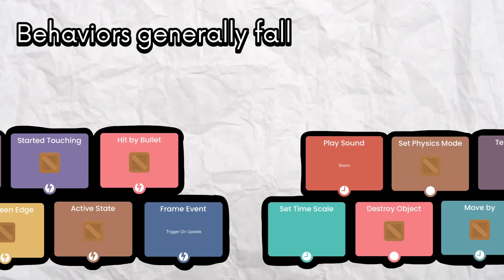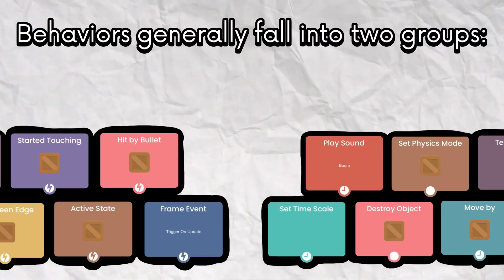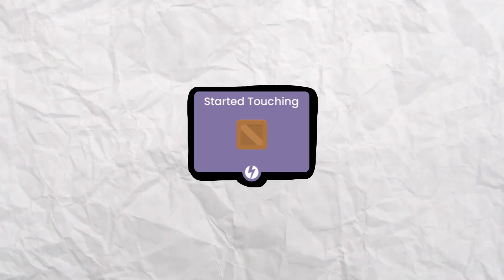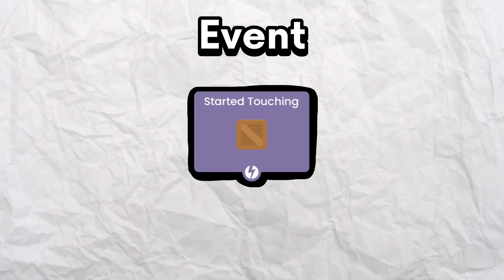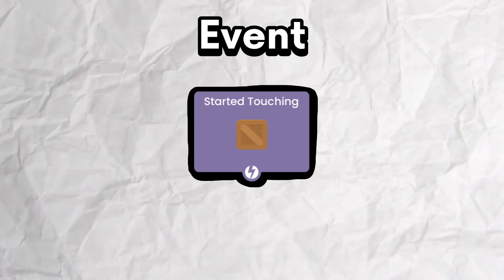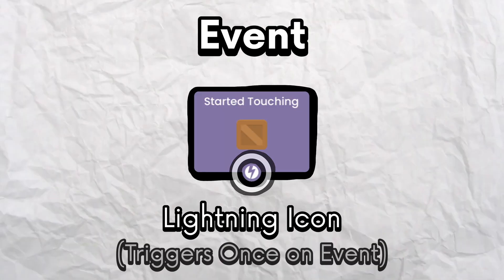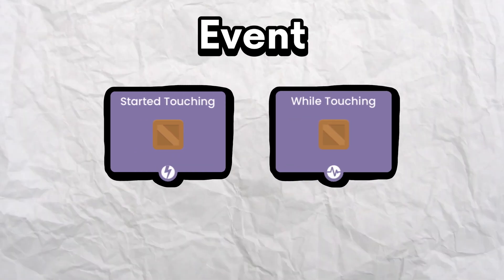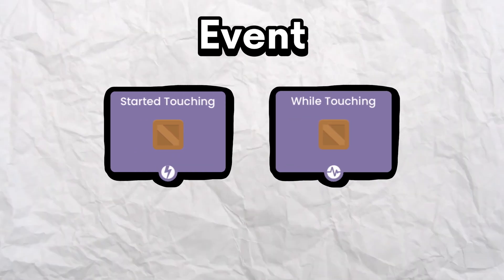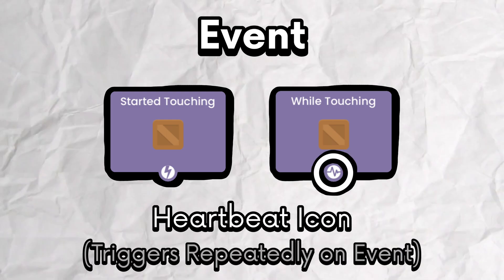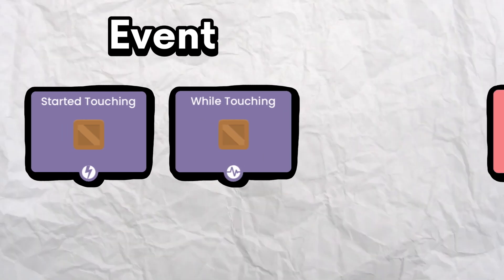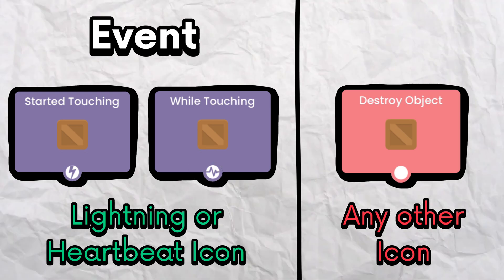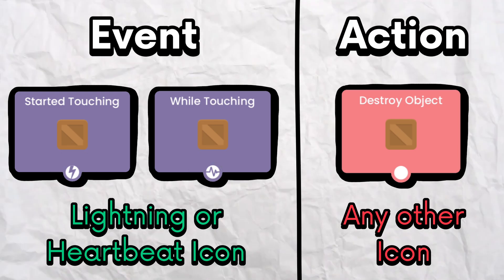Behaviors generally fall into two groups: event behaviors and action behaviors. This behavior is an event behavior — you can tell because it has a lightning icon as its connector. This behavior is also an event behavior because it uses a heartbeat icon as its connector. So if a behavior doesn't have a lightning or heartbeat icon, it is an action behavior.